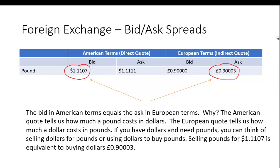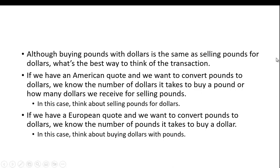The bid in American terms is equal to the ask in European terms. The American quote tells us how much a pound costs in dollars; the European quote tells us how much a dollar costs in pounds. If you have dollars and you need pounds, you can think of selling dollars for pounds or using dollars to buy pounds. Selling pounds for $1.1107 is equivalent to buying dollars at 0.9003 pounds.